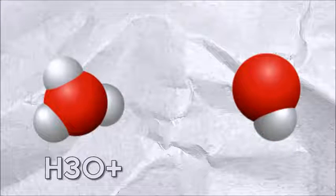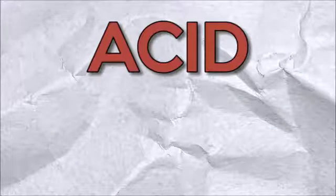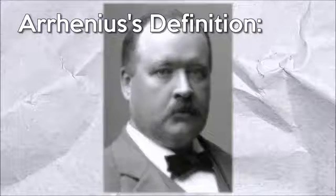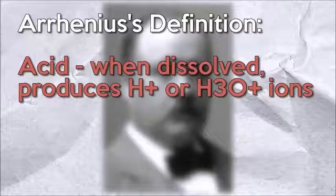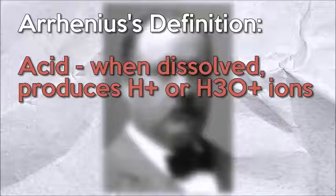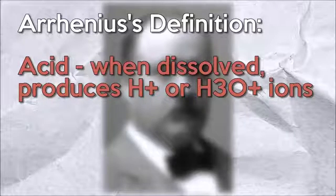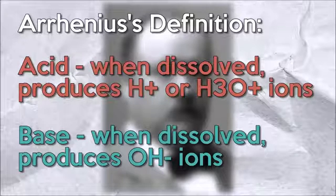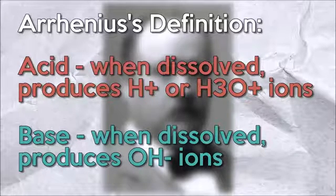The two products that result from this reaction are the basis of what an acid and a base are, which by Arrhenius' definition, an acid is a substance that when dissolved produces hydrogen and hydronium ions, whichever one is correct, while a base on the other hand produces hydroxyl ions.